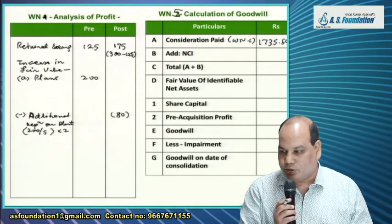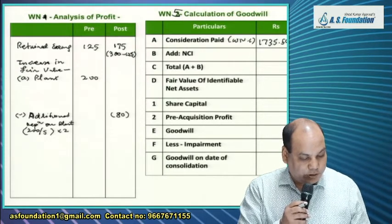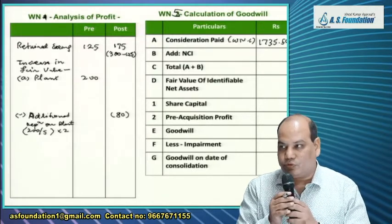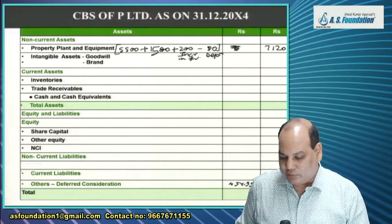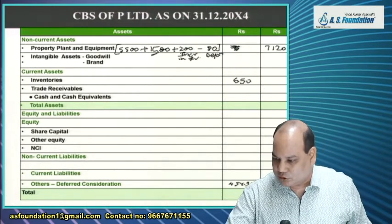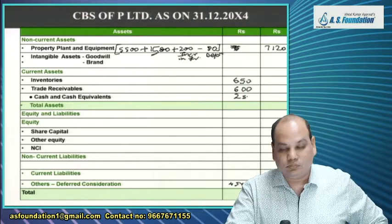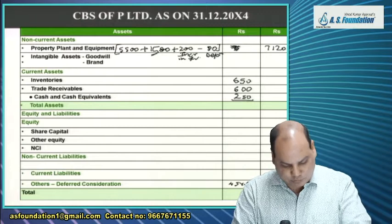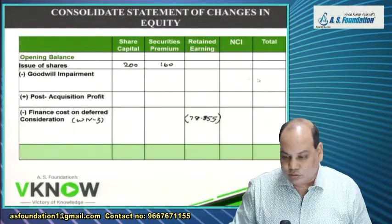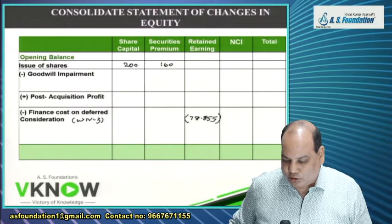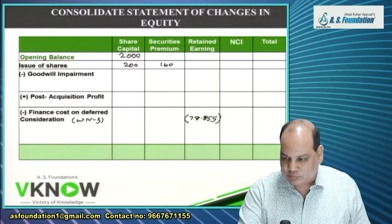Inventory total: Rs. 650 (thousands). Receivables and cash totals combined with inventory give approximately Rs. 500 (for the remaining items). Come to the liability side and SOCIE. Share capital opening balance: Rs. 2,000. Opening securities premium: nil. Opening retained earnings of P Limited: Rs. 1,400.